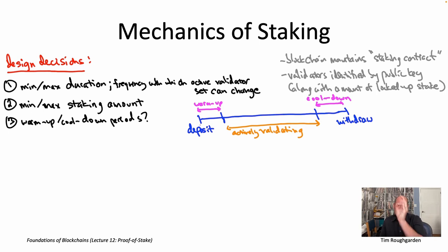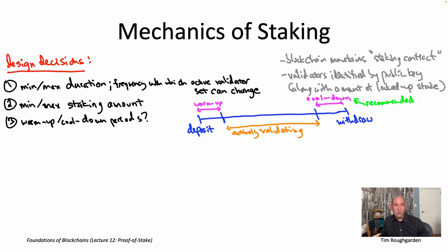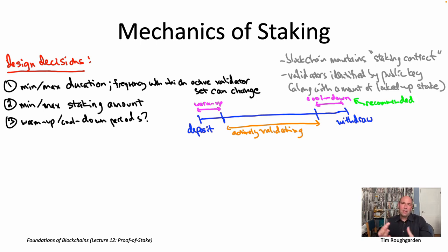The node initiates withdrawal at the start of the cool-down period — that's when they stop being able to validate — and only at the conclusion of the cool-down period can they actually execute the withdrawal. This is important so that you have time to detect any misbehavior by that validator before they've had a chance to withdraw their funds. Best practice is to have at least some kind of cool-down period. For a protocol with slashing, like proof-of-stake Ethereum, you can only slash while the funds are locked up, so the cool-down must be long enough to gather evidence of misbehavior.